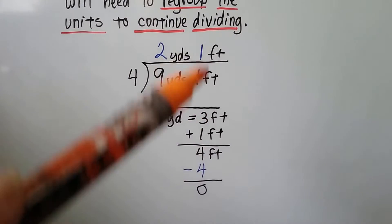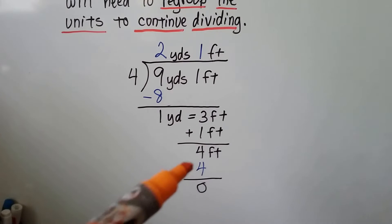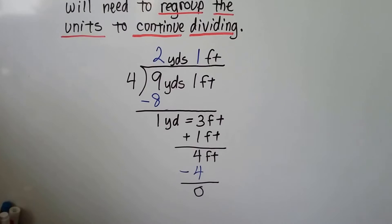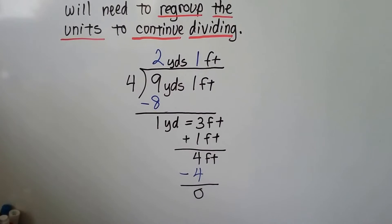4 goes into 4 feet one time. 4 times 1 is 4. We do our subtraction and get a 0. 9 yards and 1 foot divided by 4 is 2 yards and 1 foot.